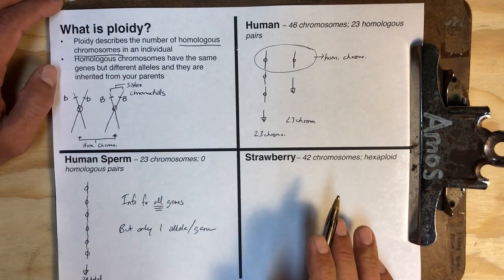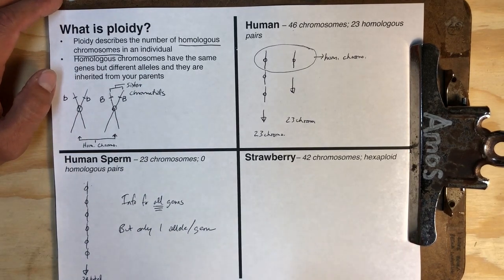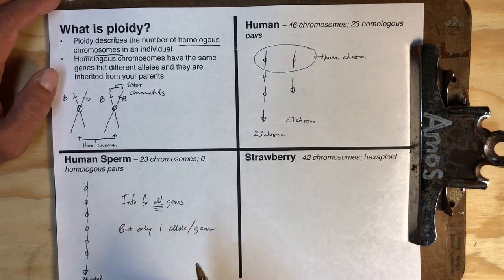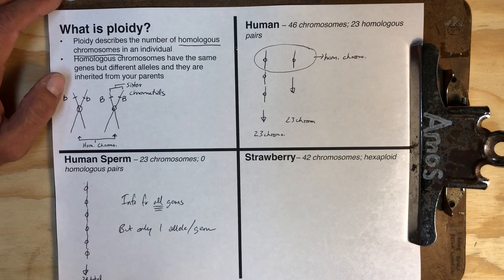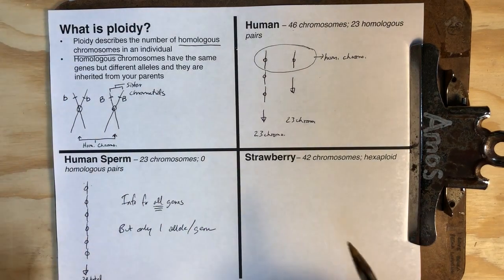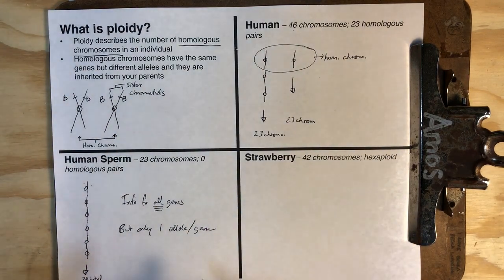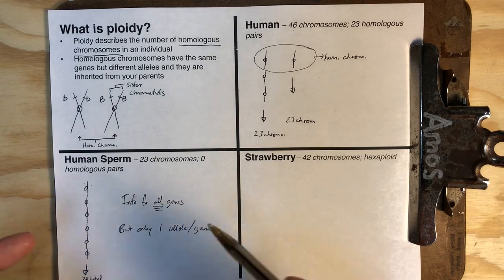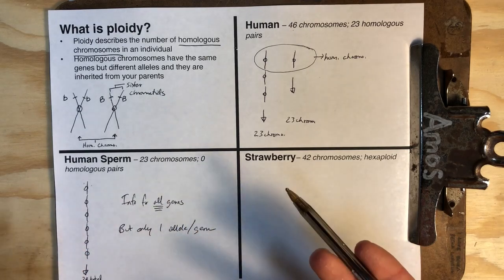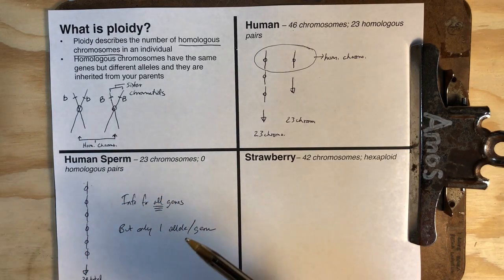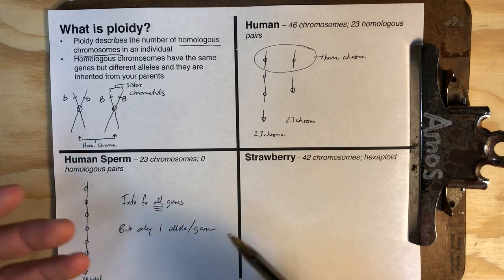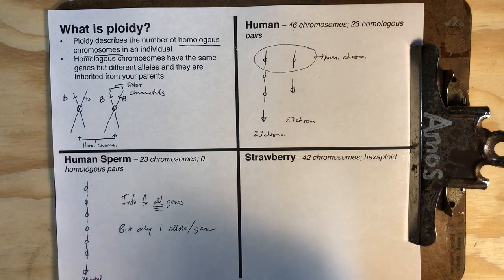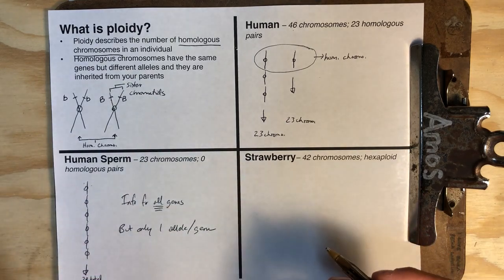Even though you might look more like your mom or more like your dad, you are exactly 50% your mom and 50% your dad, because both your mom and your dad gave you information for every single gene in your body. If they didn't, we would know that because you would either have extra chromosomes or be missing chromosomes, which has very significant consequences inside of human beings.